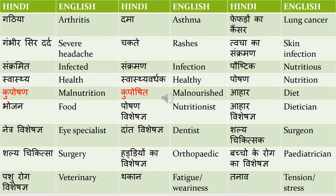Poshtic means nutritious. Swastya means health. Swastya vardak means healthy — 'Swastya vardak khana khana chahiye aapko' means 'you should eat healthy food.' Kuposhan means malnutrition, and kuposhit means malnourished. I have used different variations of the same word so you understand in which context and tense it is used. Ahar means diet, and bhojan means food — there is a small difference between diet and food.